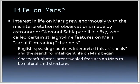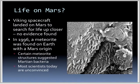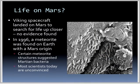Interest in life on Mars grew with the misinterpretation of observations by astronomer Giovanni Schiaparelli in 1877, who called certain straight-lined features on Mars 'canali,' meaning channels. English-speaking countries interpreted this as canals and the search for intelligent life on Mars began. Spacecraft photos later revealed the features were natural land structures. The Viking spacecraft landed on Mars to search for life and found no evidence. In 1996, a meteorite found on Earth known to have come from Mars showed certain structures suggesting fossilized bacteria, but today most scientists remain unconvinced it is not simply a crystal formation.